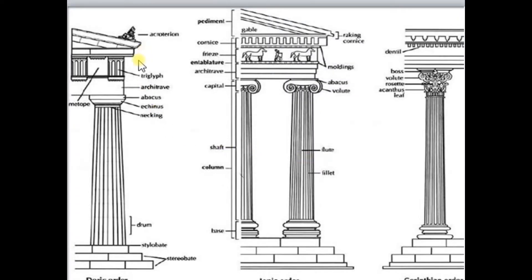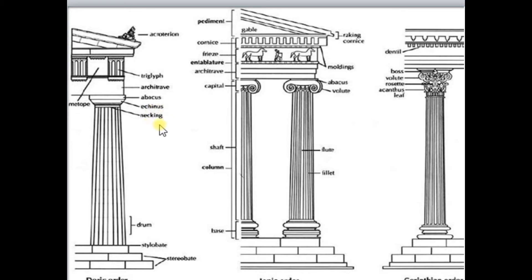These are the various parts of the Greek orders. This is the Doric order, this one is the Ionic order, and this one is the Corinthian order. These are the various architectural features and nomenclatures. The parts include the drum, triglyphs, architrave, abacus, anchors, and necking. This one is called the gable.